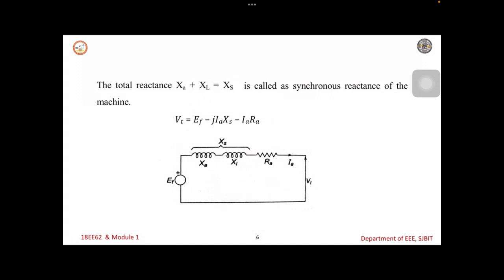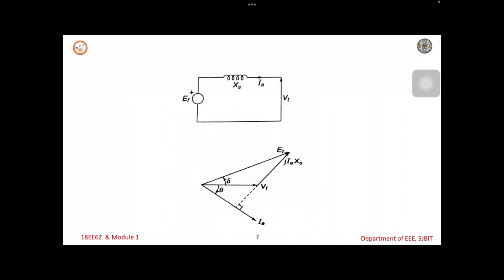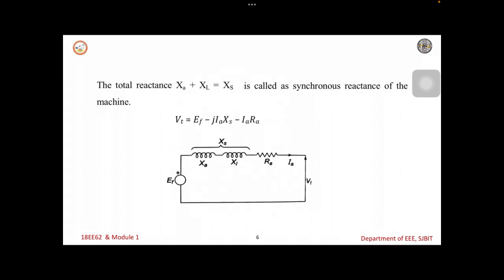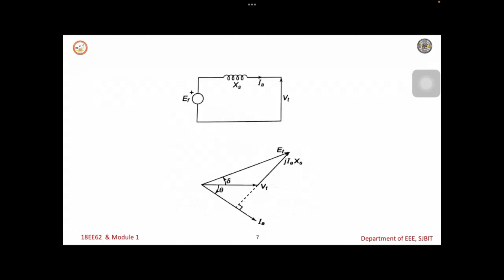Next, if you neglect the resistances and the consideration of XA and XL as XS, we will get this equivalent circuit shown here. This is the equivalent circuit by neglecting the resistances. Always we neglect in the analysis the resistances drop because this would not change the performance of the system behavior. Resistance will contribute only the heat losses. Therefore, in the analysis we always neglect the resistance in the circuits.